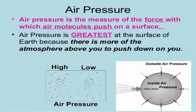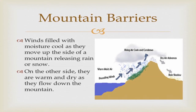Now let's talk about mountain barriers. Mountains affect the climate by blocking the wind and receiving more rainfall than low-lying areas. When wet air blows towards the mountains, it is forced to move upward. At higher altitudes, due to low temperature, the wet air gets cooler, causing moisture to condense and fall as rain.